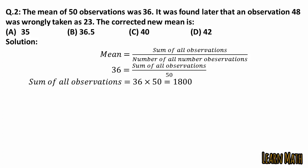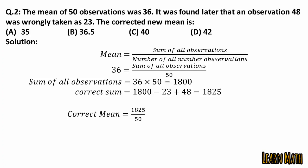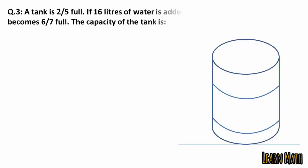Now the correct sum is 1800 minus 23 (the wrong value) plus 48 (the correct value), which equals 1825. The correct mean is 1825 divided by 50, which equals 36.5. Option B is the correct option.